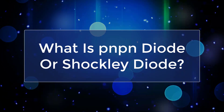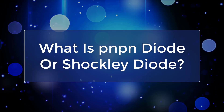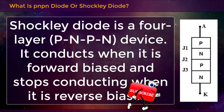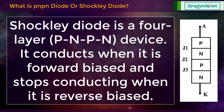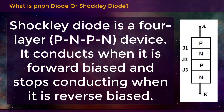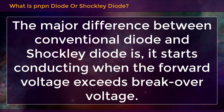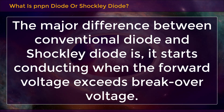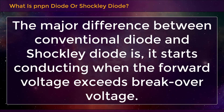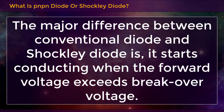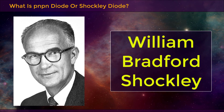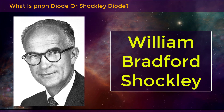What is a PN-PN Diode or Shockley Diode? Shockley Diode is a 4-layer PN-PN device. It conducts when it is forward biased and stops conducting when it is reverse biased. The major difference between a conventional diode and Shockley Diode is that it starts conducting when the forward voltage exceeds the breakover voltage. Shockley Diode was invented by William Bradford Shockley, and that's why it is named after its inventor.